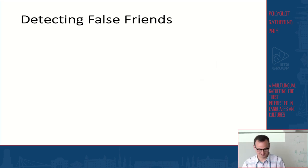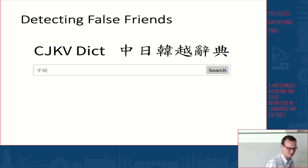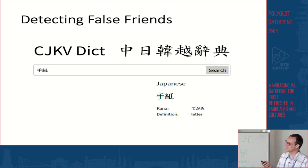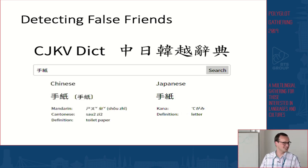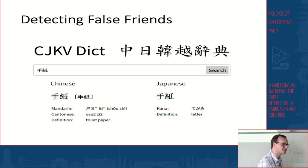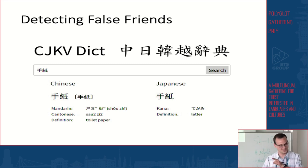Sometimes the false friends can be even funnier. These two characters read 'tegami' in Japanese and mean 'letter.' But in Chinese they mean 'toilet paper.' So unless you want to ask your Chinese friends whether they've received the toilet paper you sent them, do yourselves a favor and don't use CJKVDICT as a Chinese-to-Japanese dictionary. You've been warned.